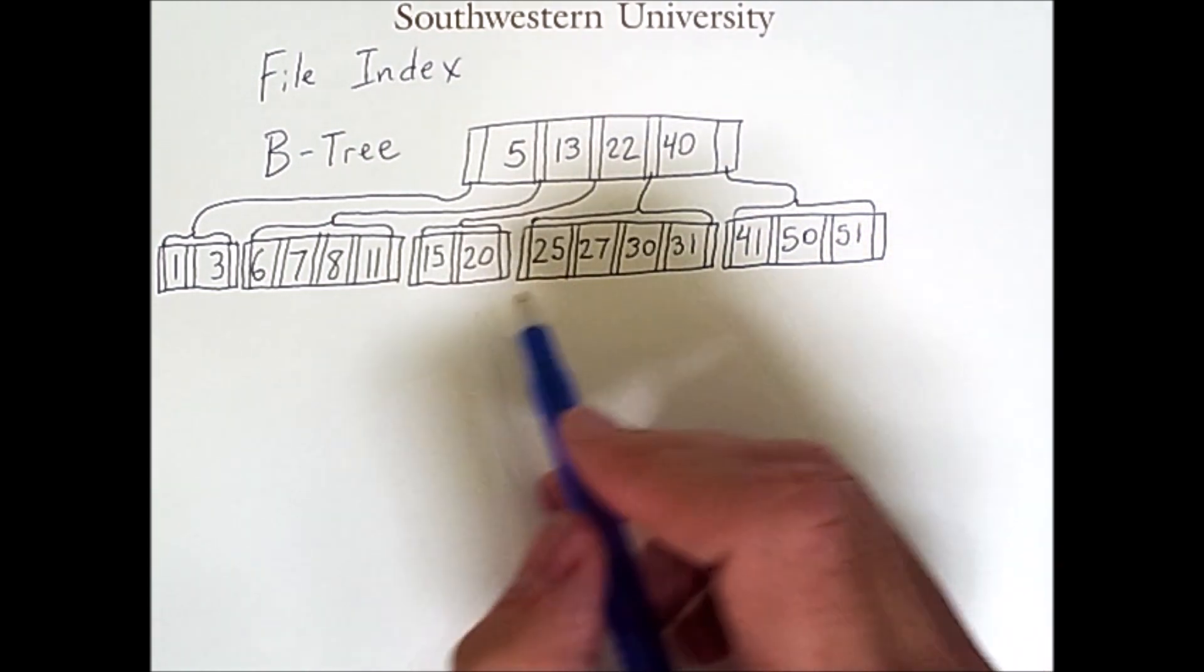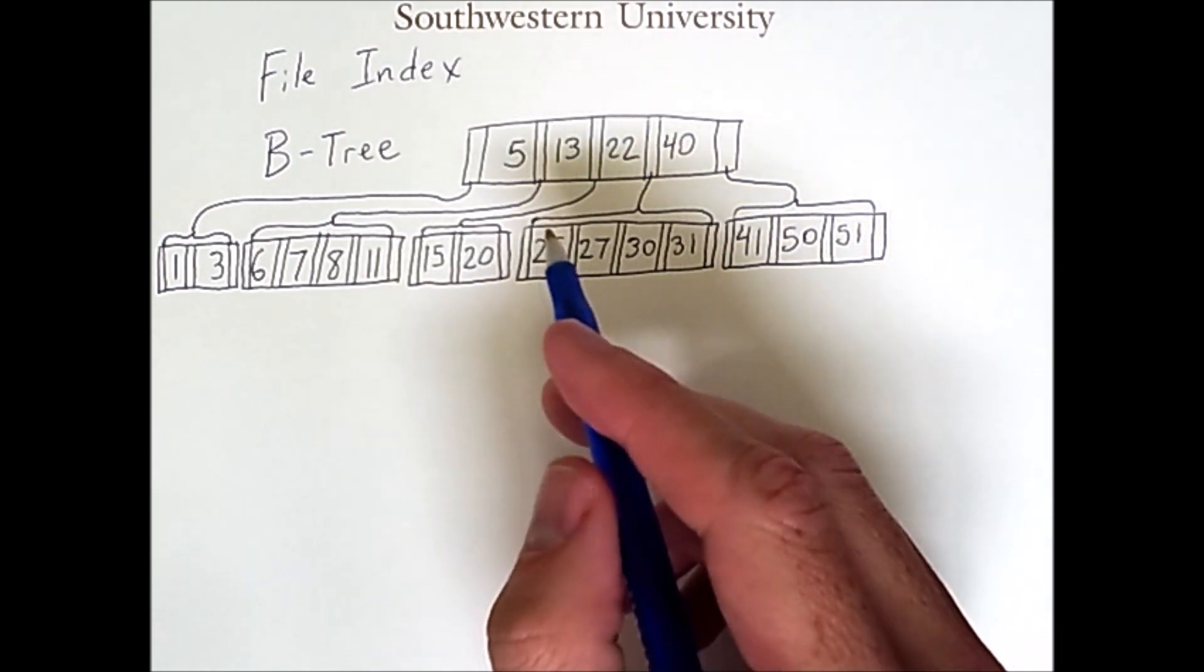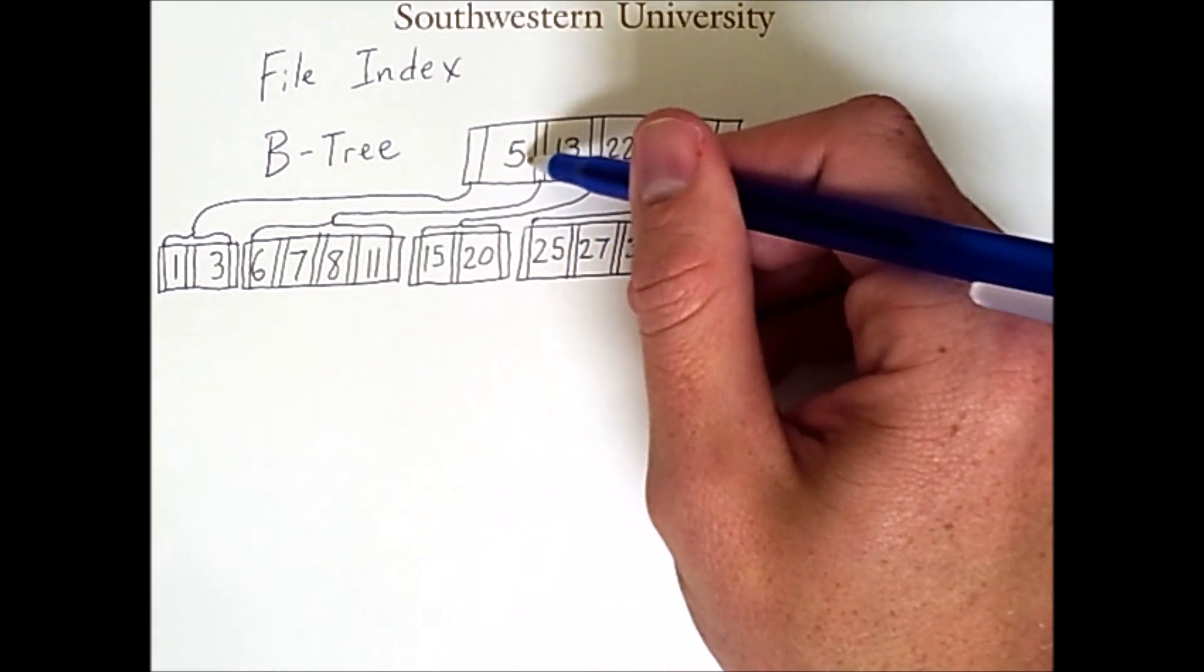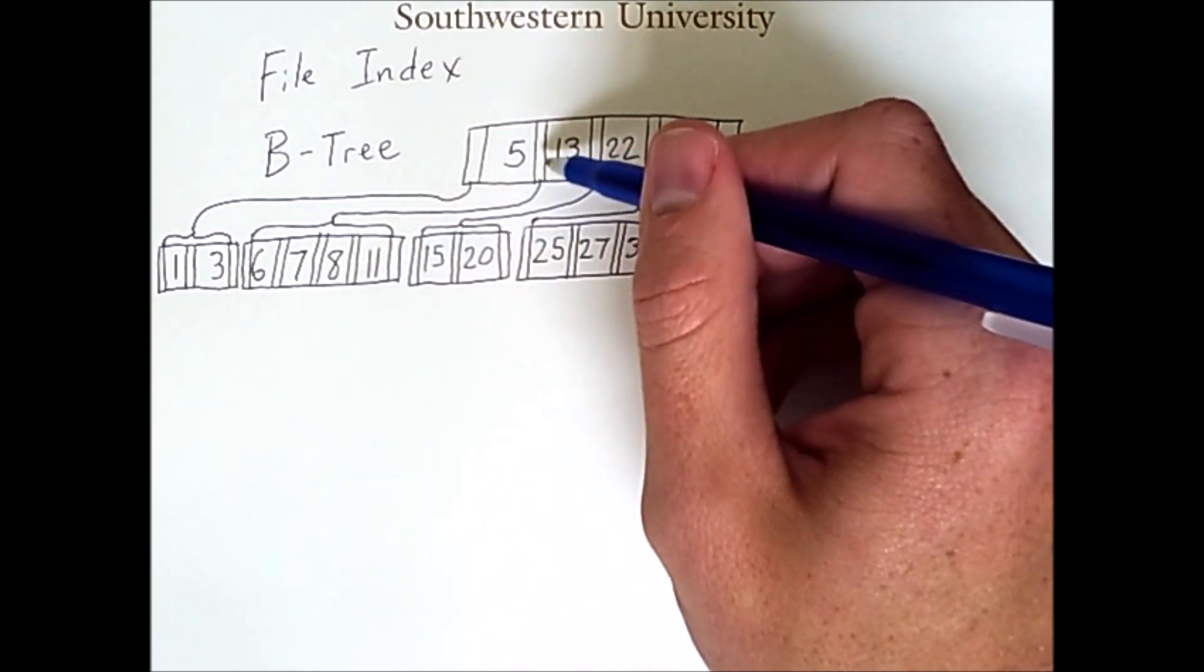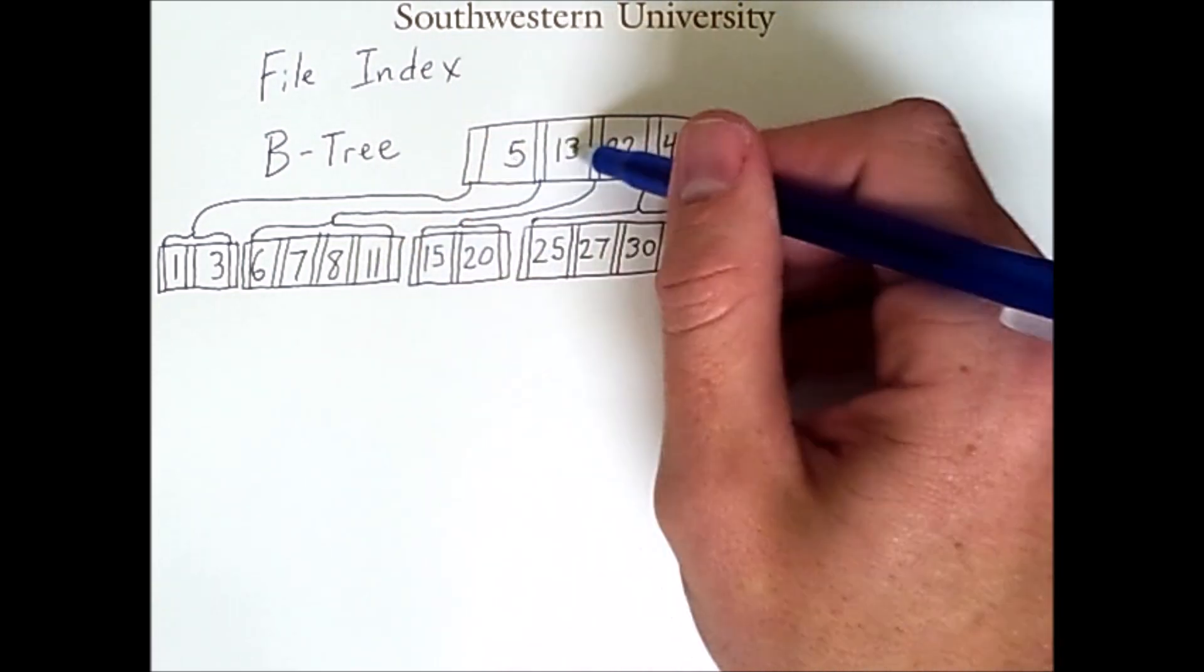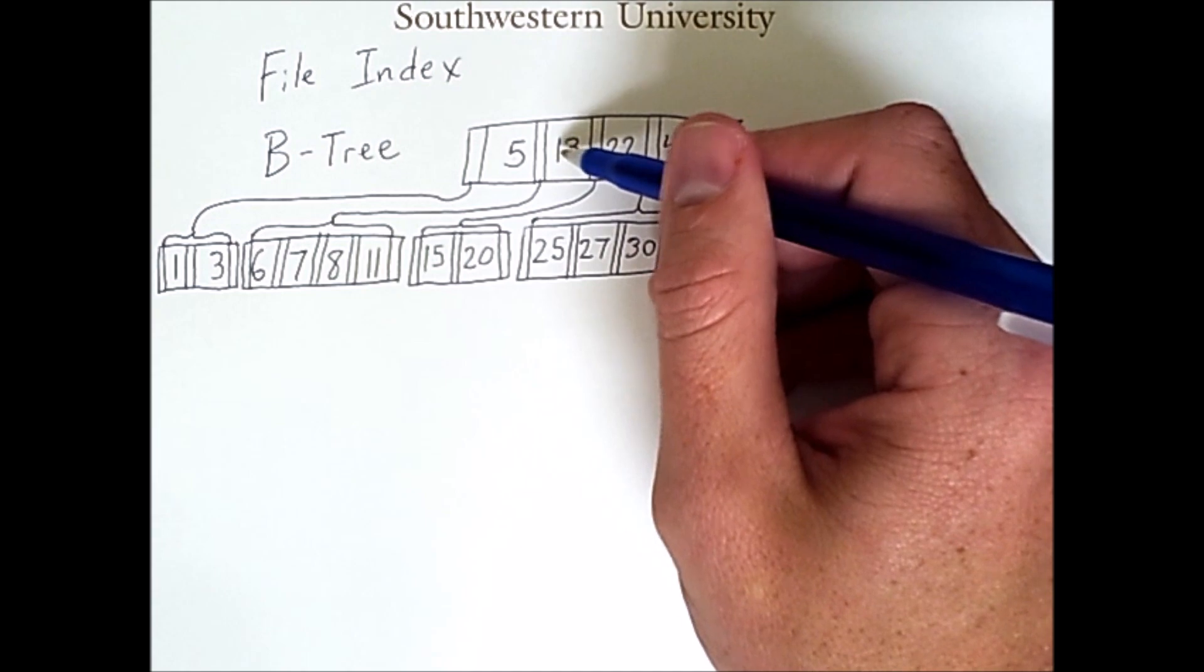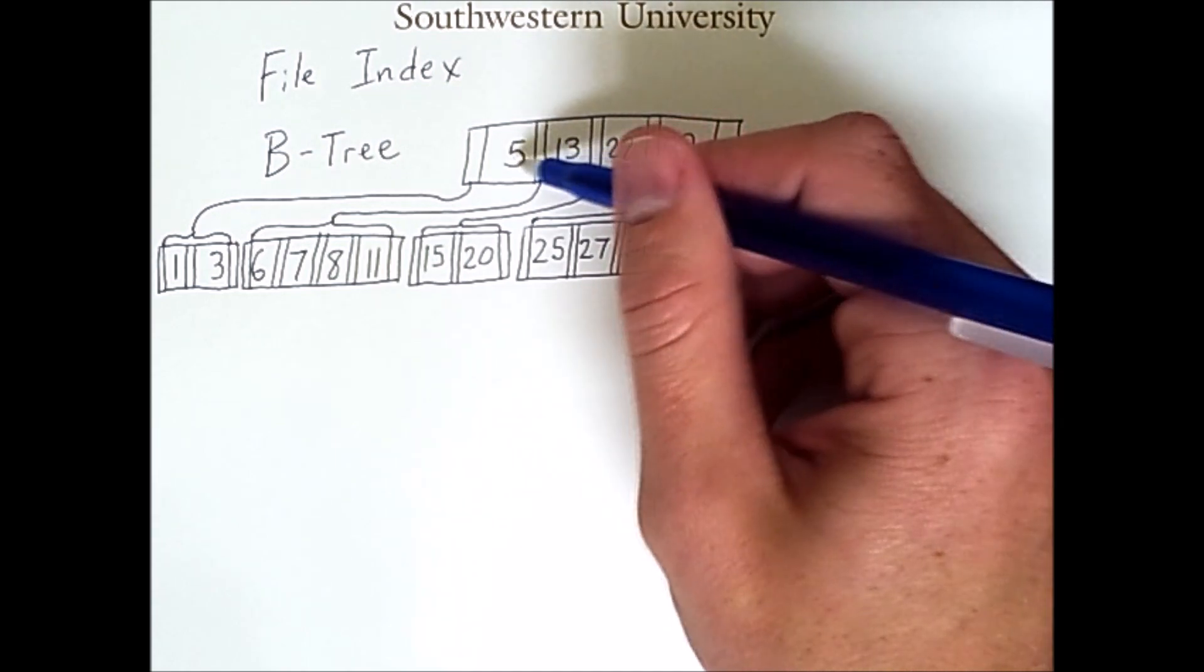Now, I said that the tree was sorted, and that's because any child node, or rather all keys in child nodes between two keys will be between those keys in value.